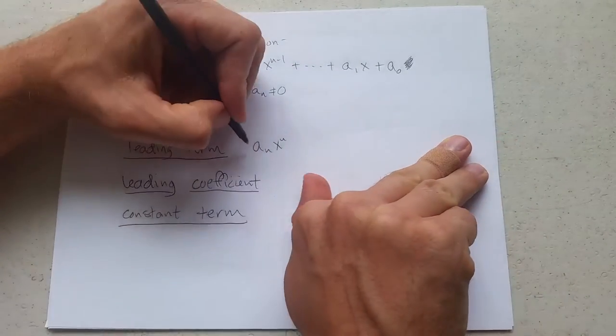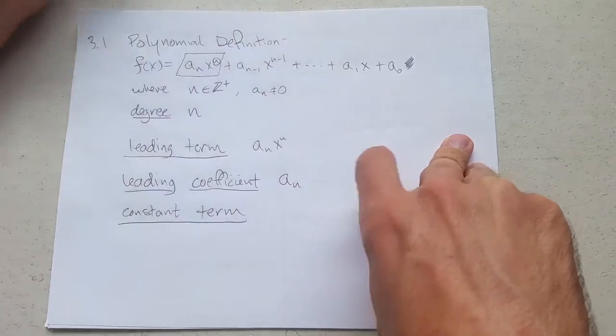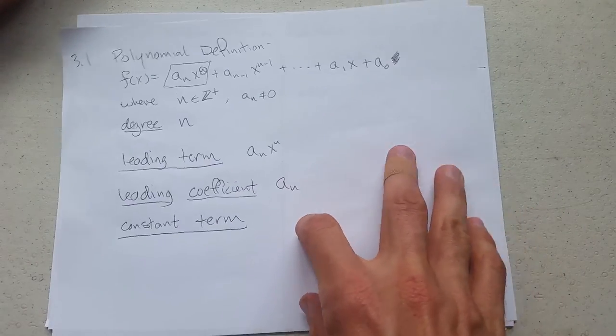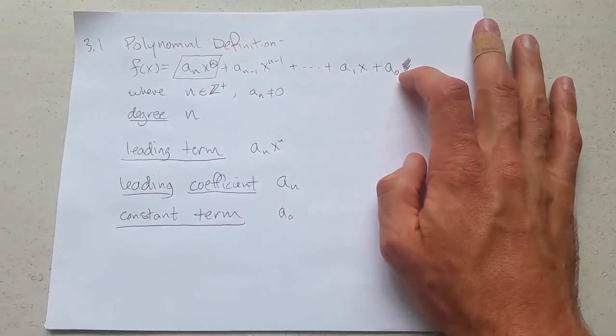The leading coefficient, you just pick off the coefficient, whatever number a_n is. What's the constant term? That's the last one, a_0.